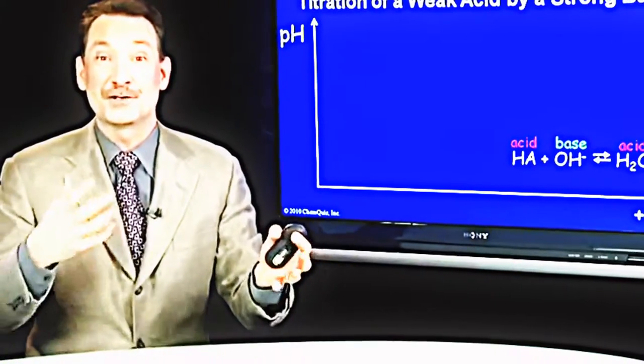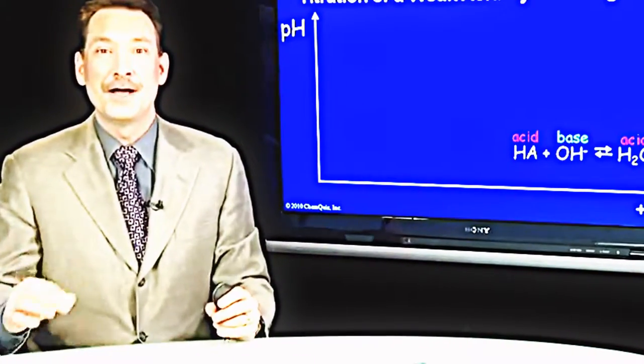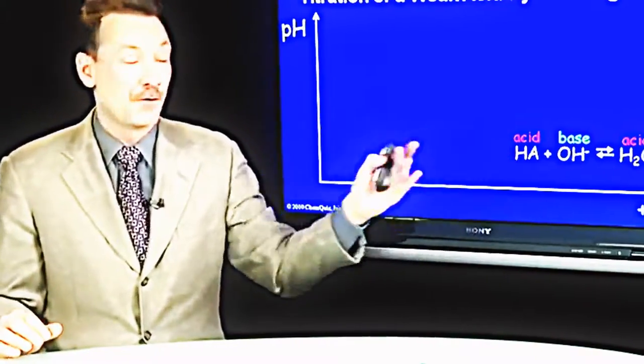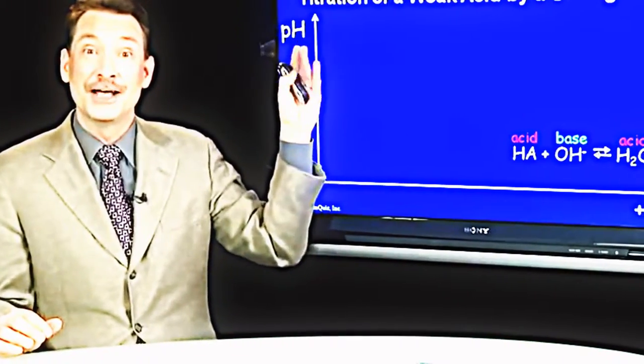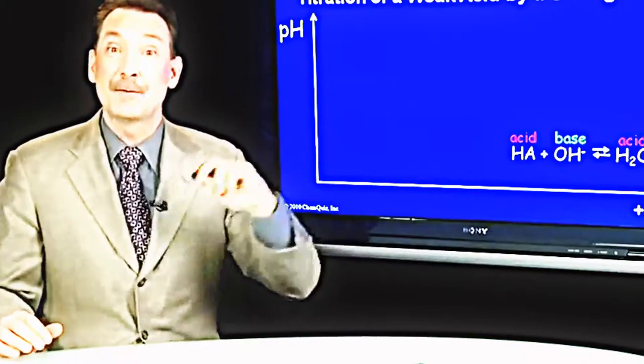The reaction of a weak acid with a strong base can be followed by what's called a titration curve, where we plot the pH of the solution and how that changes versus how much base we've added.